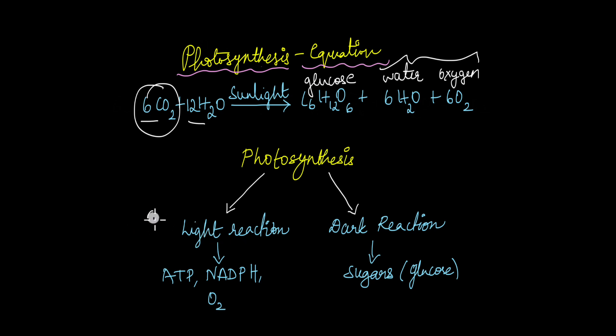The light reaction is also known as the light-dependent reaction and it absolutely needs sunlight to take place. The dark reaction is also known as the light-independent reaction because it does not need sunlight, at least not directly. It is independent of sunlight and can even take place for a certain amount of time even in the absence of sunlight.